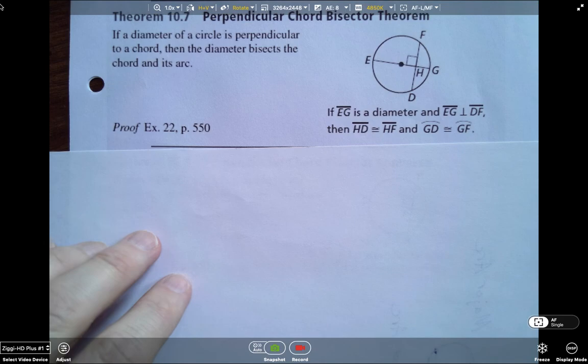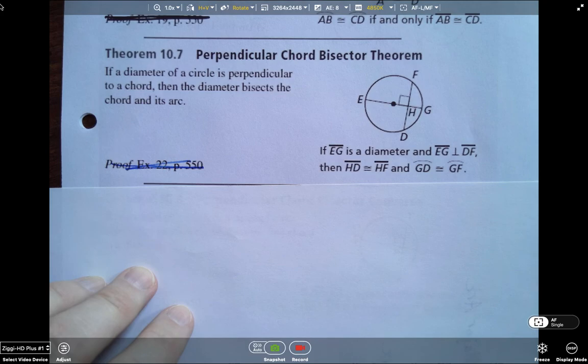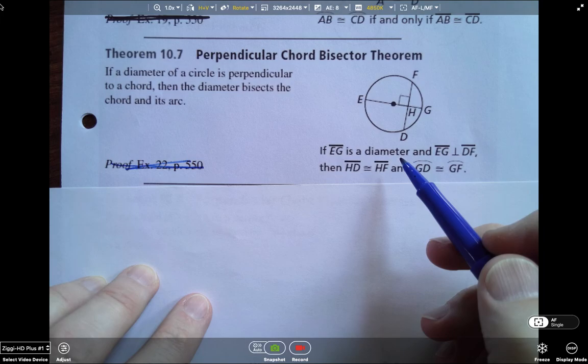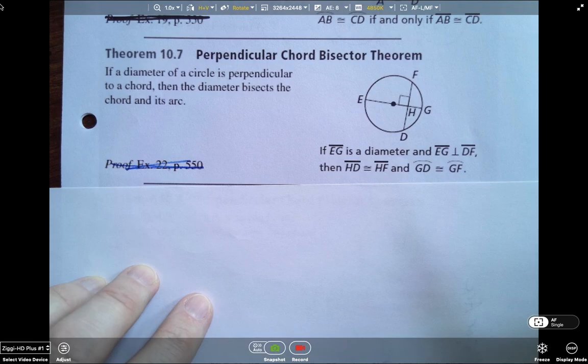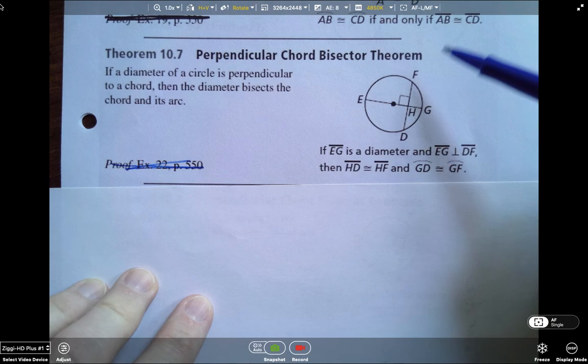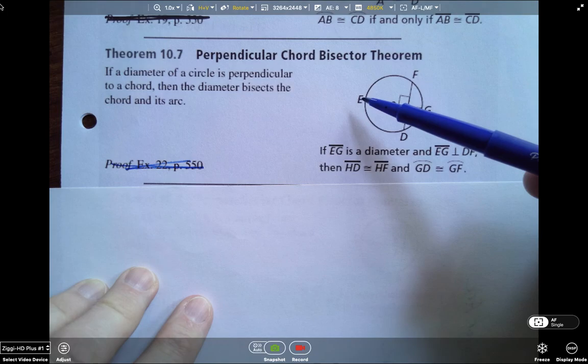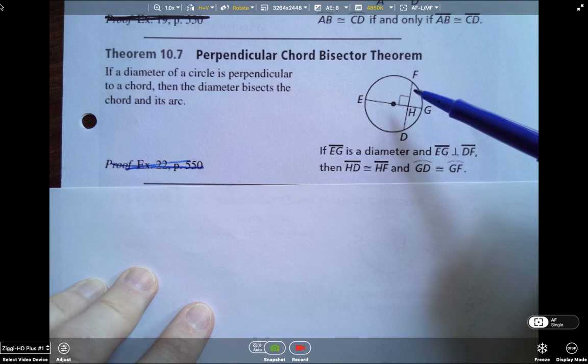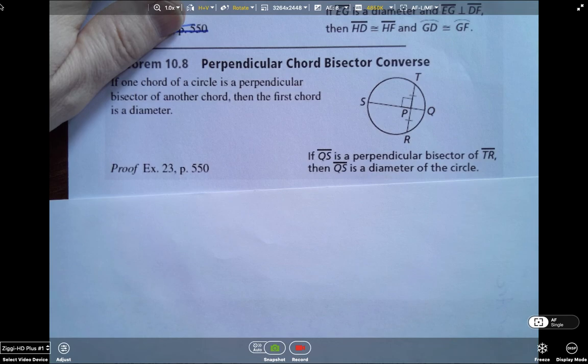Note card number two. Again, write this down. Pause it if you need to. I'm not going to worry about the proof. So we're talking about the diameter being perpendicular to the chord. If we know that, then we know that the diameter bisects the chord. So segment FH is congruent to segment HD and it bisects the arc. So that arc GD is congruent to arc GF. And that's only if the diameter is perpendicular to the chord.